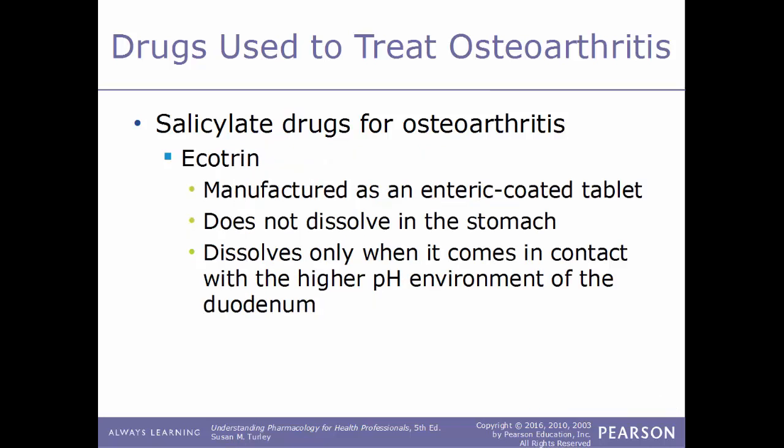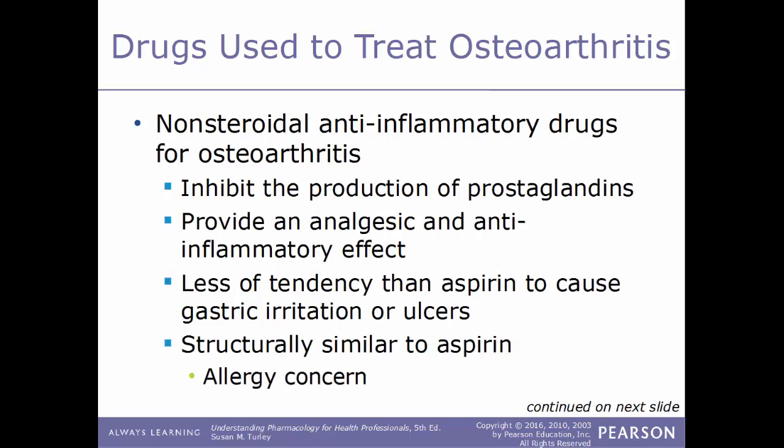Ecotrin is manufactured as an enteric-coated tablet so it will not dissolve in the stomach. Like all enteric-coated tablets, it is meant to dissolve only when it reaches the small intestine, specifically when it contacts the higher pH environment of the duodenum — the very first part of the small intestine. Another type of drug used to treat osteoarthritis is NSAIDs — nonsteroidal anti-inflammatory drugs.